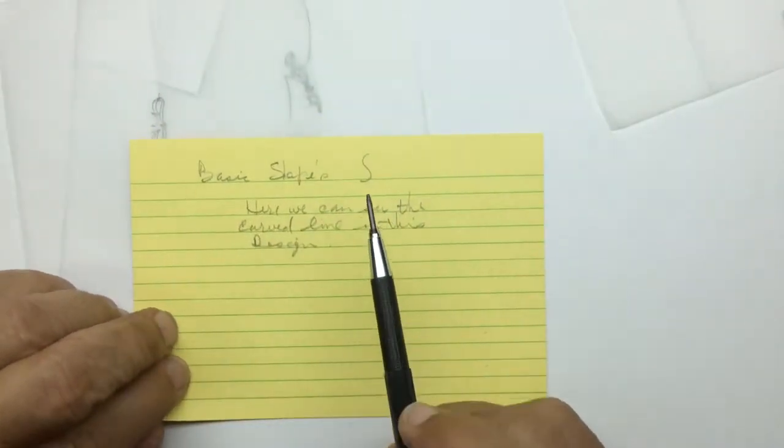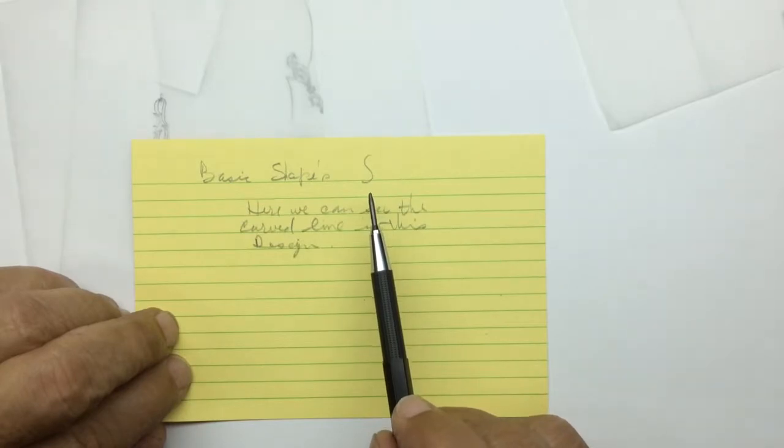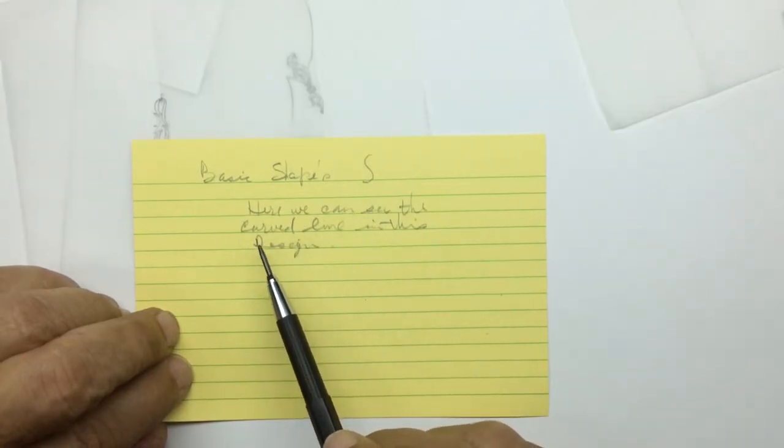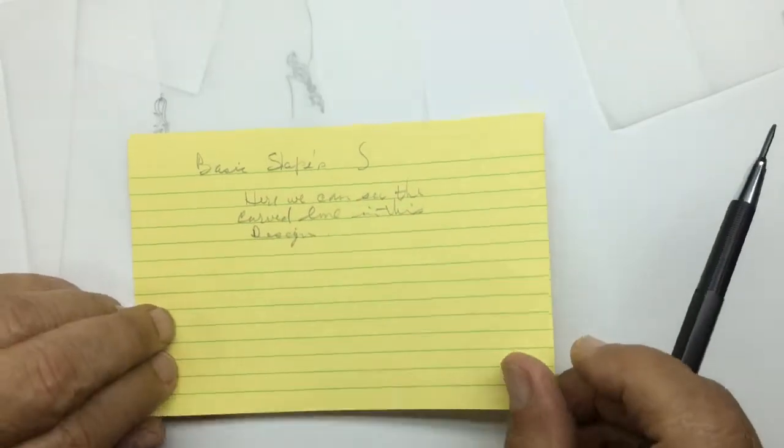Now, one shape we didn't cover was this S shape. Here you can see the curved line in this design.